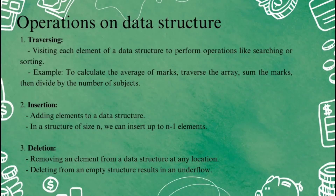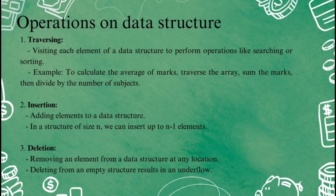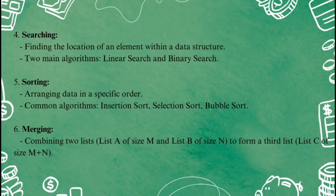Coming to the next slide, we will look at operations on data structures. There are six fundamental operations. First is traversing — this simply means visiting each element of a data structure to perform some operation, like searching or calculating something. Next is insertion — this operation adds a new element to a data structure. For example, in an array of size n, you can insert up to n-1 elements because arrays have fixed sizes. Next is deletion — you remove an element from the data structure. You can delete an item from any location, but deleting from an empty structure causes an underflow. Next is searching — this operation helps us find the location of an element in a data structure. There are two main types of searching algorithms: linear search and binary search.